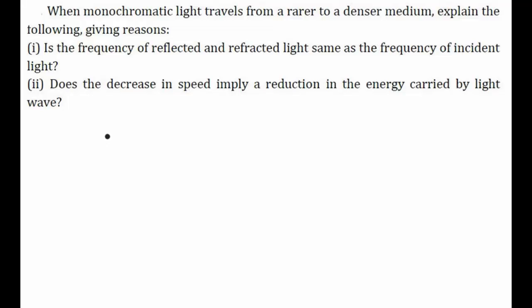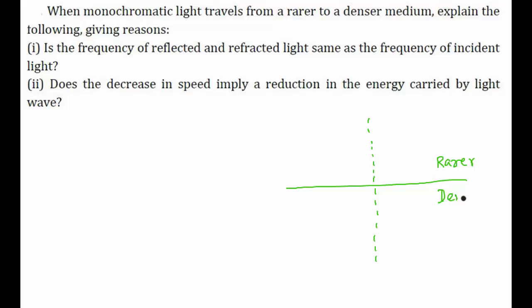Hello everyone, let's try to solve this question from the chapter ray optics and optical instruments. When monochromatic light travels from a rarer to a denser medium, explain the following giving reasons. We have a single light and two mediums — a rarer medium and a denser medium — and a monochromatic light, meaning a single wavelength, travels from the rarer medium to the denser medium.